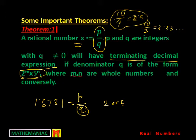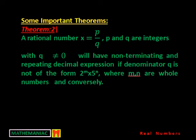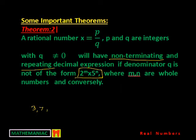This is a very important theorem. Related to this, another important theorem is that if by chance in the reduced form the denominator is not in this form — meaning there will be factors other than 2 and 5, prime factors like 3 or 7 or anything other than 2 and 5 — which is also not cancelled when you reduce this, then in that case the decimal expression will be non-terminating.